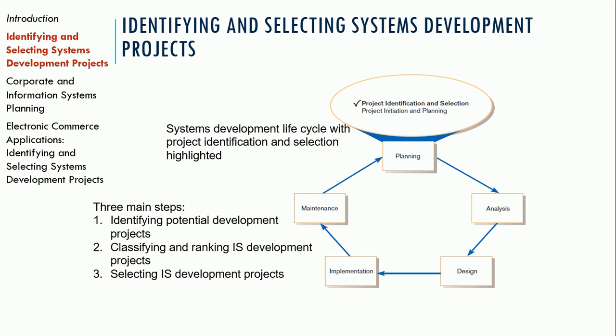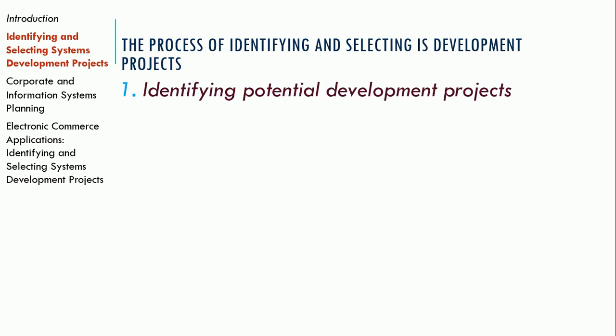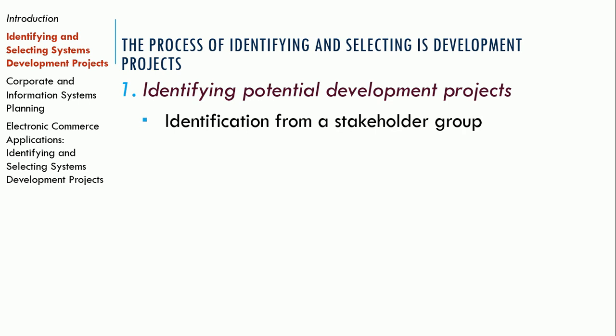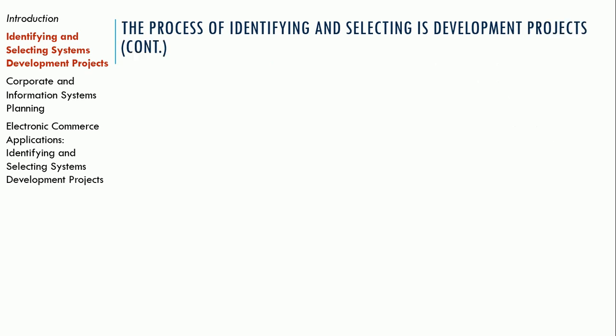We're solidly in the planning phase now. At this point in a project, when we're looking at identifying and selecting systems development, this is something we do in the planning phase of the SDLC — and this is where the overlap with project management occurs. So let's talk about identifying and selecting development projects. First, we want to identify potential development projects. This could be identification coming from a stakeholder group — a group of users or business people who know their needs and come to the IS department saying they need a way to do something.